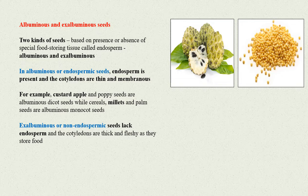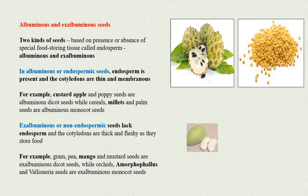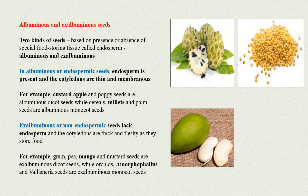Exalbuminous or non-endospermic seeds lack endosperm and the cotyledons are thick and fleshy as they store food. For example, gram, pea, mango, and mustard seeds are exalbuminous dicot seeds.